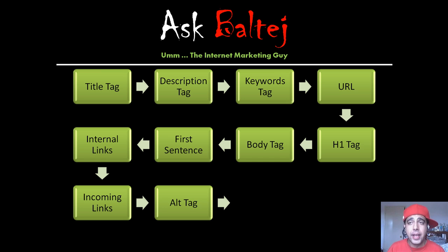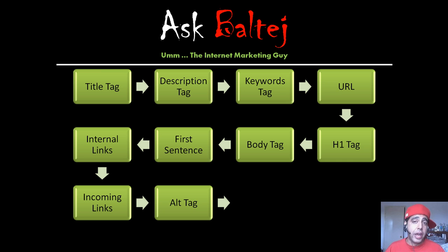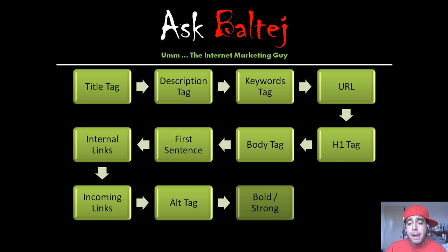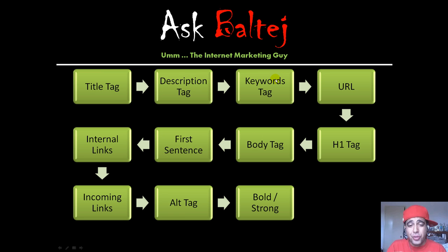There's also something called the alt tag, which is used for pictures. When you mouse over an image and get that little yellow bubble showing you what the picture is about — if your keyword phrase is in there, these are all bonus items. I'm not saying if you just put your keyword phrase in your alt tag you're going to be on page one of Google. All these things I'm listing are just factors and points — the more you do of all this, the higher the probability you will be on page one. And if you bold some of your keyword phrases or make them strong or bigger, it tells the search engines that phrase is important to your website.